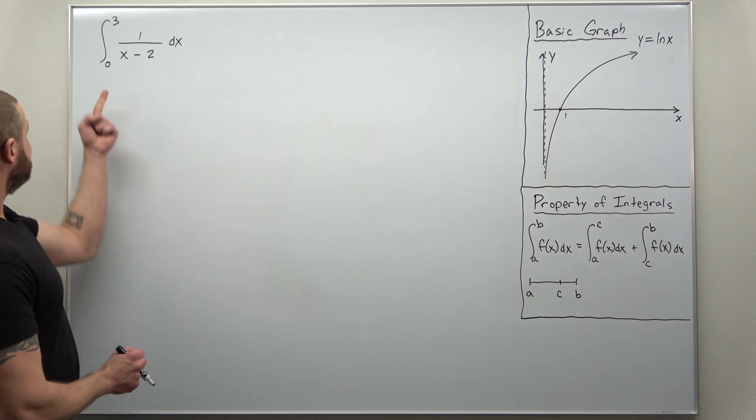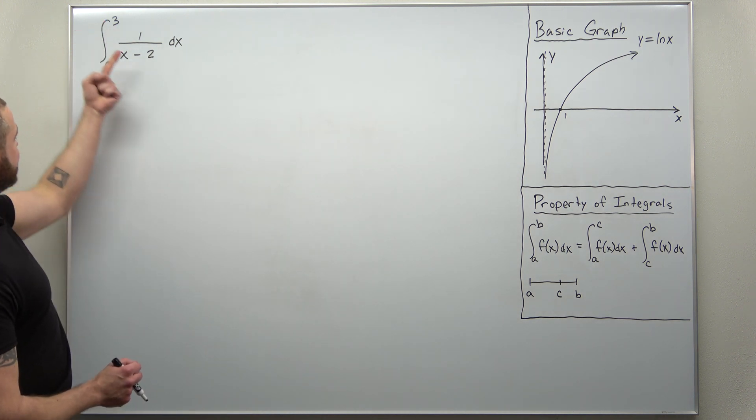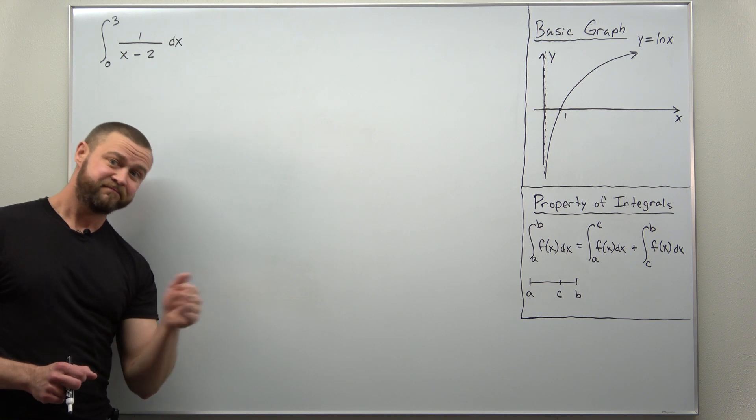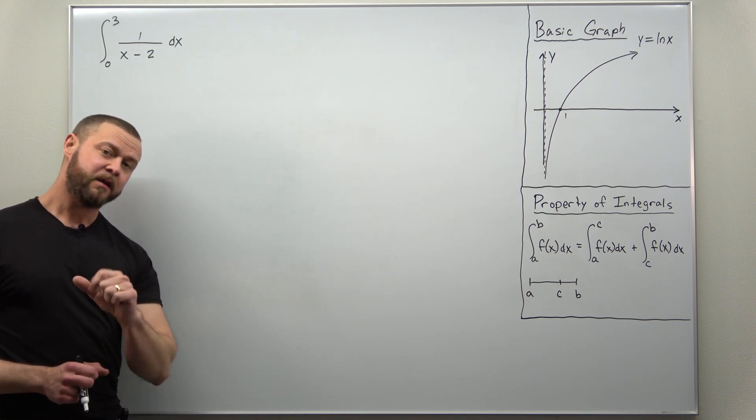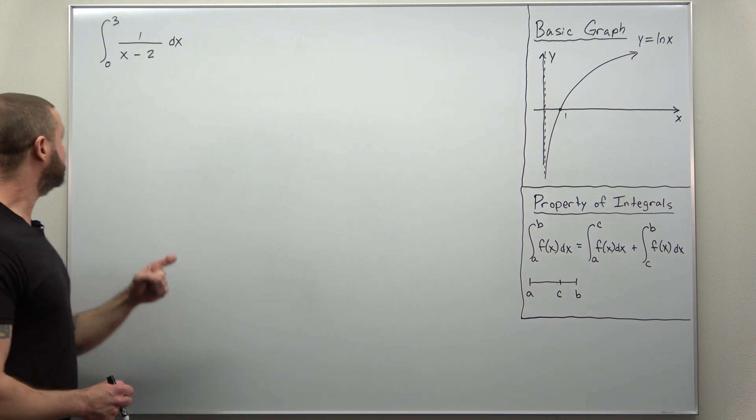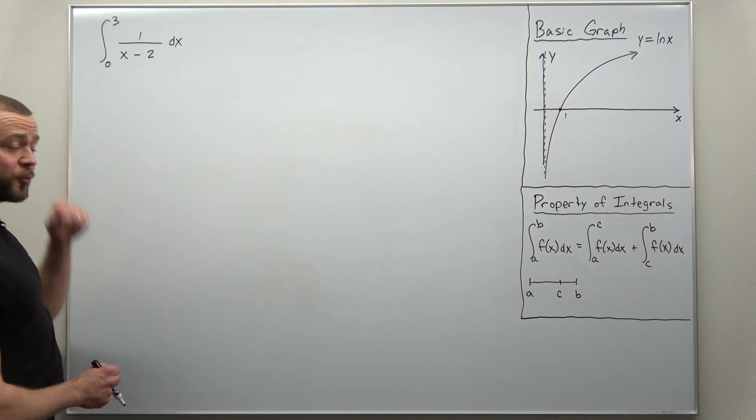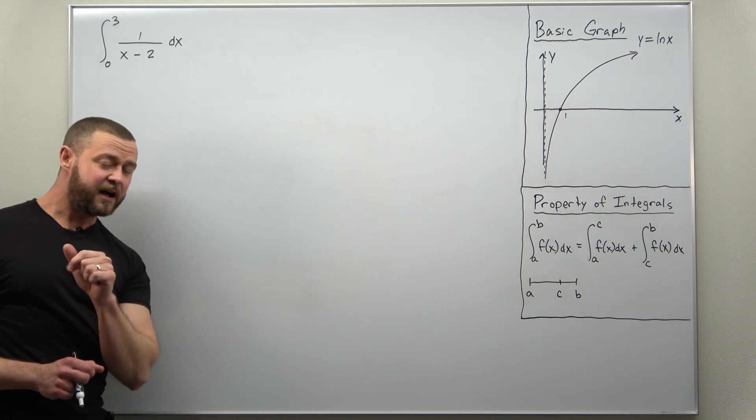And if you were to plug in 0 and 3 to your function, the function is defined at both 0 and 3. This is improper because between 0 and 3 there is a value for X that makes this function undefined.